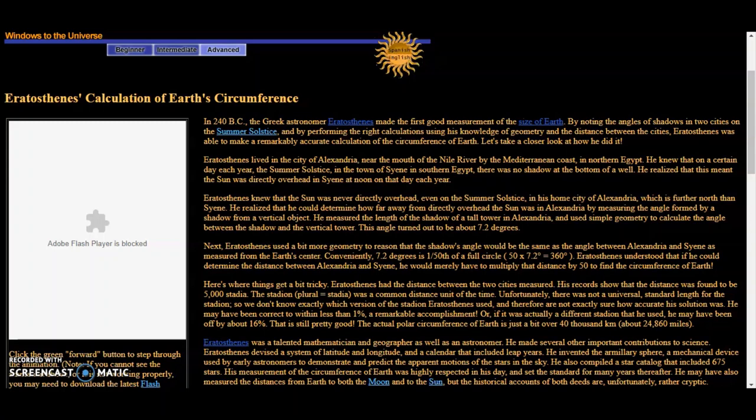He may have been correct to within less than 1%, a remarkable accomplishment. Or, if it was actually a different stadia that he used, he may have been off by about 16%. That is still pretty good. The actual polar circumference of the earth is just a bit over 40,000 km, which is about 24,860 miles.